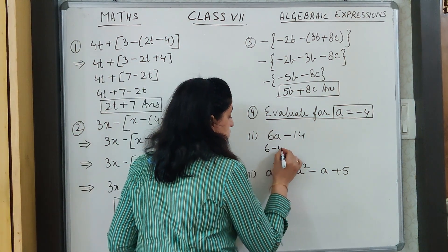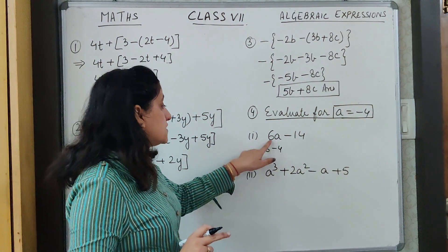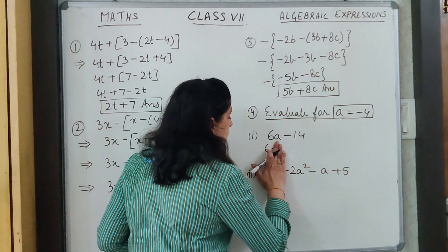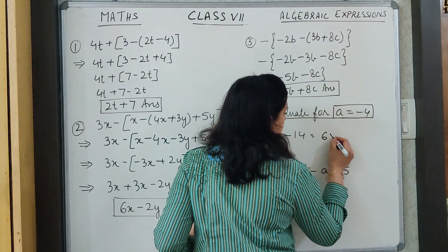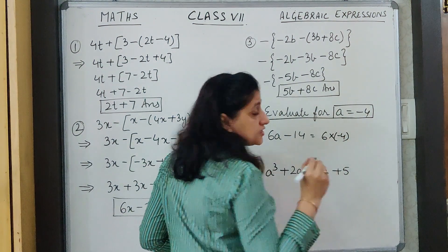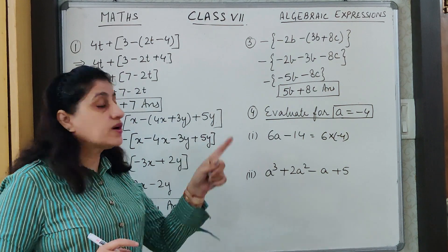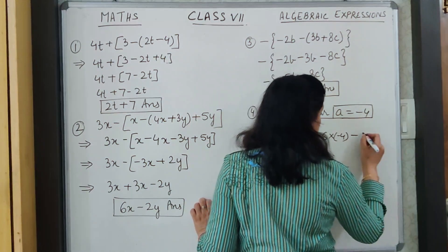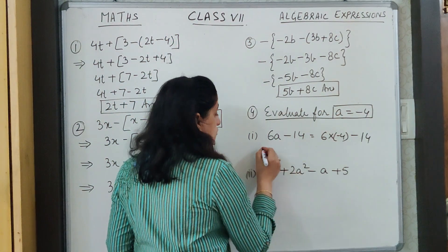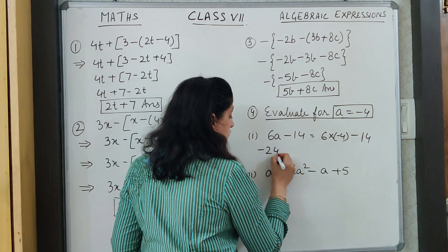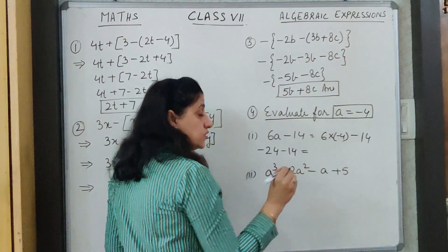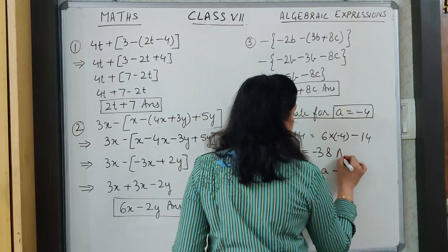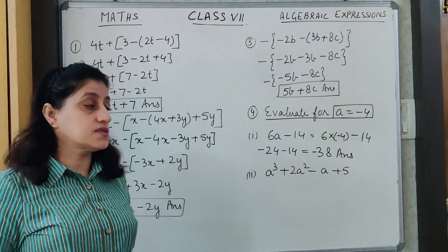A very common mistake children make: 6A means 6 multiplied by A, so I will do 6 multiplied by minus 4. We must follow whatever signs are given in the question, then minus 14. So 6 into minus 4 gives minus 24, minus 14. Both terms are minus, so they are added, and because they belong to the minus category they remain minus. So minus 38 is the answer.